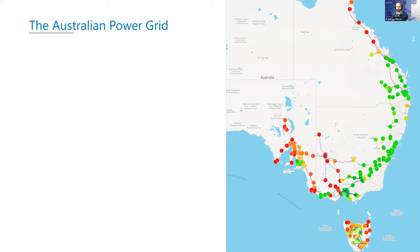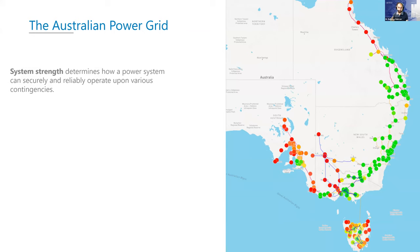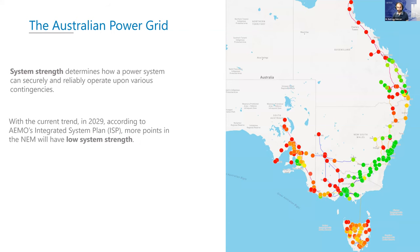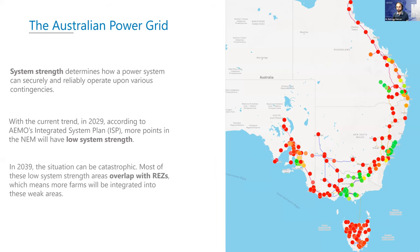This is the Australian power grid — at least the NEM, the National Electricity Market — and the dots represent system strength. Greener means better system strength, which determines how reliably your power system can operate upon different contingencies — how well it can recover from a fault. When you have very low system strength, it's difficult to recover after a fault and your farm might get disconnected. As projected by AEMO's ISP, the situation could be even worse in 2029 and worse still in 2039. We need to do something, particularly because renewable energy zones are mostly overlapping the red dots, meaning we cannot comfortably and reliably integrate more renewables.